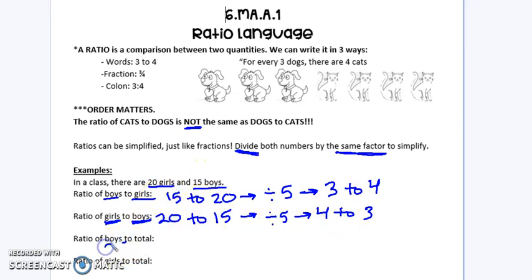Now we're looking at the ratio of boys to the total. And one thing I really want you to be careful of is the total means everybody. So the total is the girls plus the boys, which is 35.